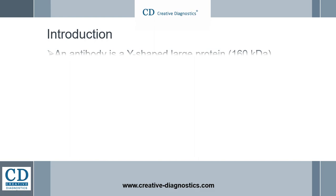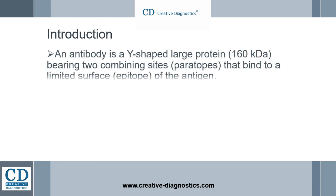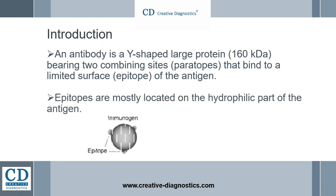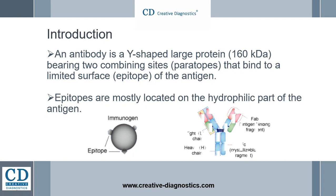An antibody is a 160 kilodalton Y-shaped large protein bearing two combining sites, paratopes, that bind to a limited surface, epitope, of the antigen specifically. Epitopes are mostly located on the hydrophilic part of the antigen. An antibody consists of two heavy and two light chains linked by disulfide bonds. The FAB fragments of H and L chains are highly variable, and the FC fragments are conservative.